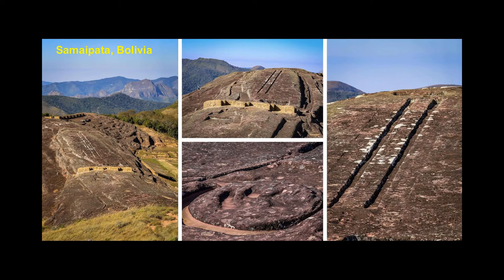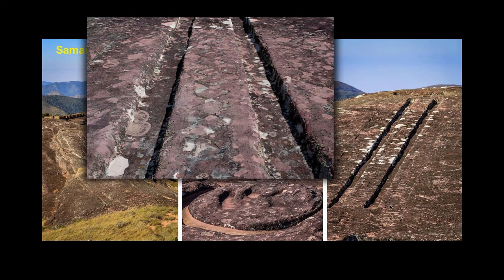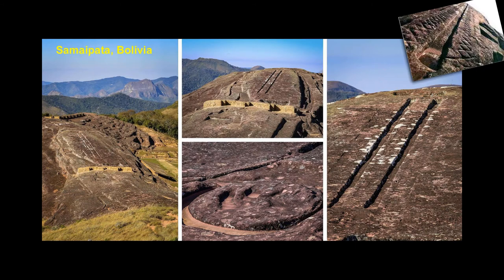Same deal basically — Semipata, Bolivia. This over here certainly resembles some type of tracks. And there's like a crisscross pattern along the side of it, which might suggest some type of tracks like the tread of tires or tank treads or something like that. So we might suspect that if we only looked at this aspect of it. But then we have like this circle aspect of it here.